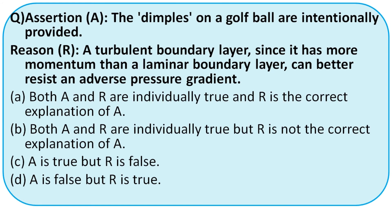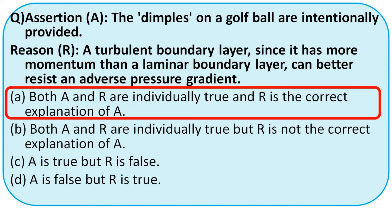Assertion: the dimples on a golf ball are intentionally provided. Reason: a turbulent boundary layer, having more momentum than a laminar boundary layer, can better resist an adverse pressure gradient. This is a very important question frequently asked in GATE and IES exams. The reason perfectly explains the assertion. The right option is option E.